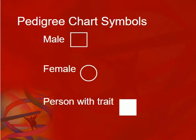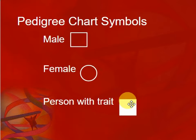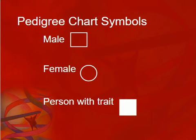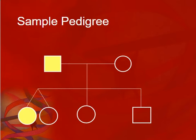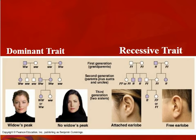Pedigrees are basically family trees. The symbols are: squares are males, circles are females. If you have the trait, you're filled in — so an affected female would be a solid circle. I use black on printouts so you can tell what's filled in. Sometimes you'll see a heterozygote marked as a half-filled box or half-filled circle, though that's not always the case. Twins are usually indicated when individuals branch out from the same point.